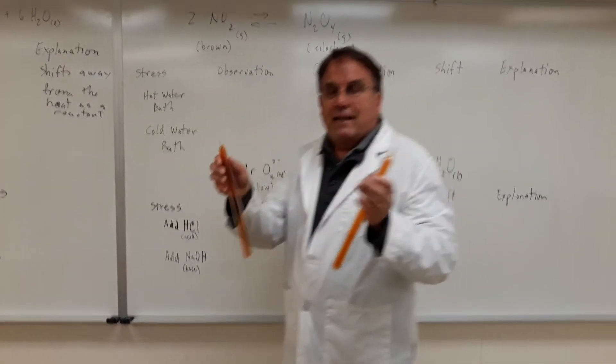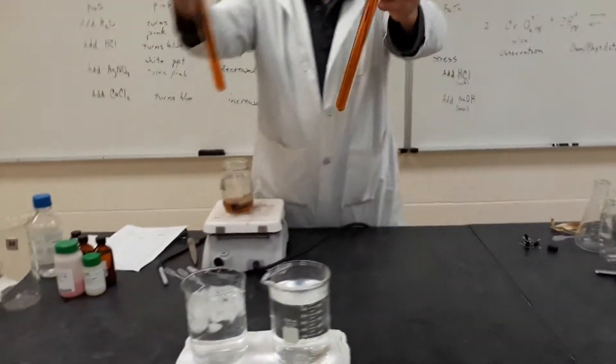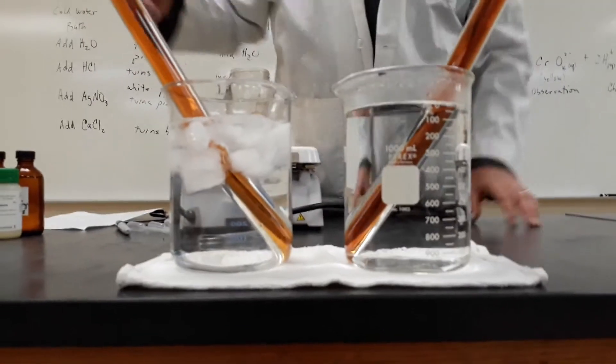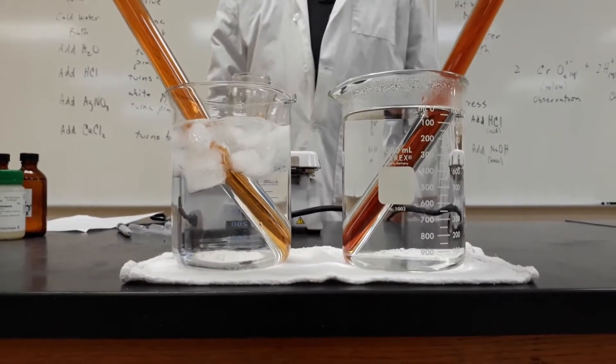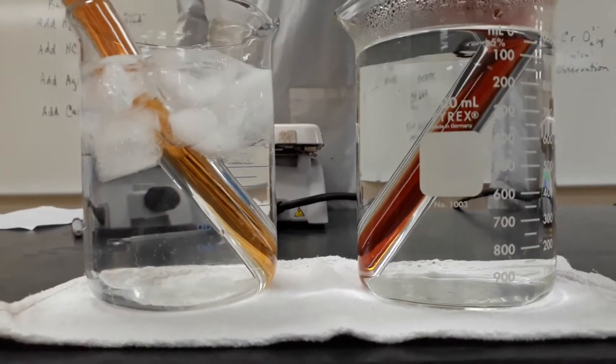Now we want to figure out is it an endothermic or exothermic equilibrium. So we'll take these two identical tubes and we'll place one in a hot water bath and one in a cold water bath, and instantly you see an immediate difference. And if you zoom in close, you can see the gas here volatilizing.